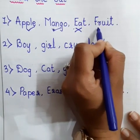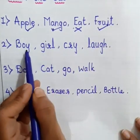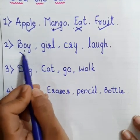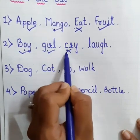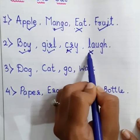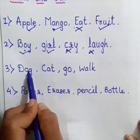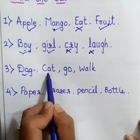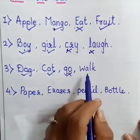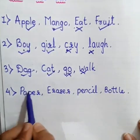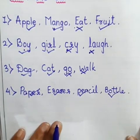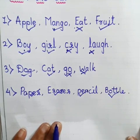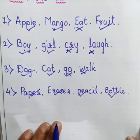Fruit — yes, it is also a noun. Boy — is it a noun? Correct. Girl — yes, it is a noun. Cry — no, it is not a noun because it is an action. Laugh — it is not a noun because it is an action. Dog — right. Cat — of course, you are right. Go — no, it is not a noun. Walk is not a noun. Paper is a noun. Eraser is a noun. Pencil is a noun. Bottle is a noun. Very good. I think you have understood noun very well. I have given you some exercises and I am quite sure you will complete them without any doubt. Thank you.